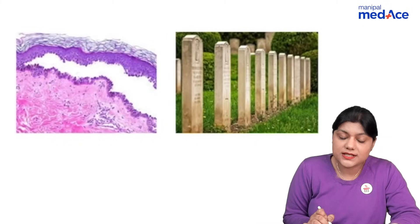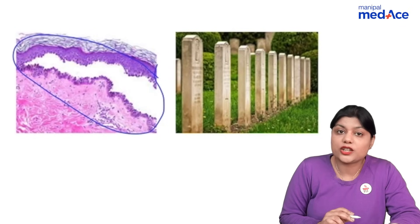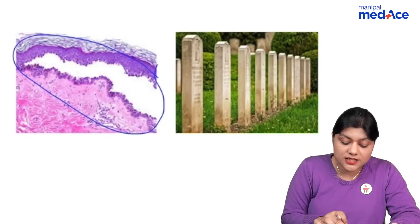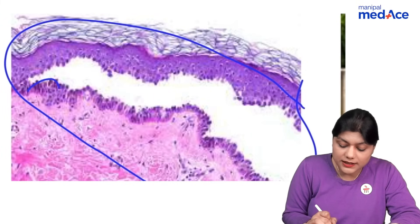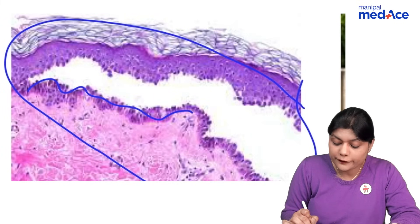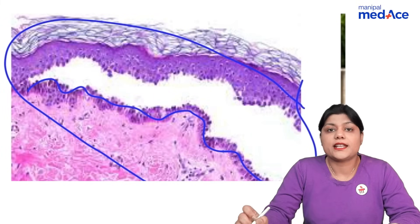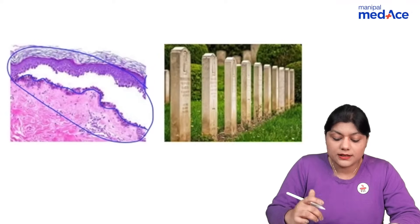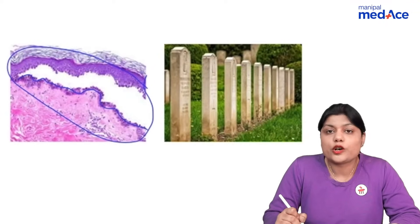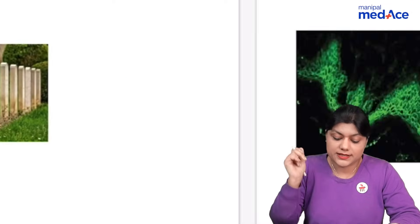Histopathology of pemphigus vulgaris is very characteristic. As you can see there is an intraepidermal acantholytic blister lined by a single layer of basal cells, and this is known as the row of tombstone appearance.